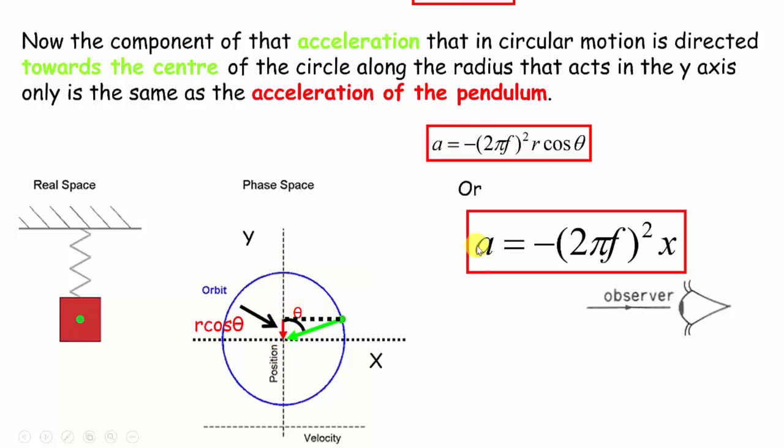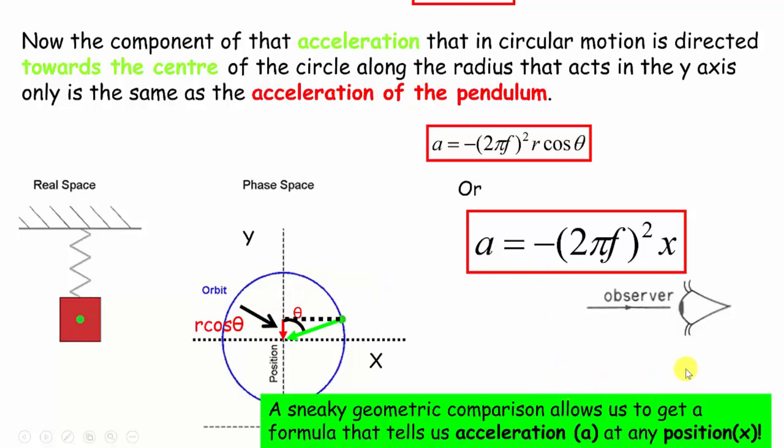We can get the acceleration by simply taking the acceleration as though it were doing circular motion and multiplying it by its displacement vertically or in the vertical. This gives us the acceleration.